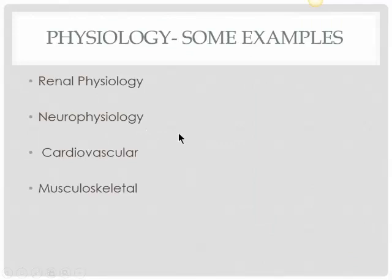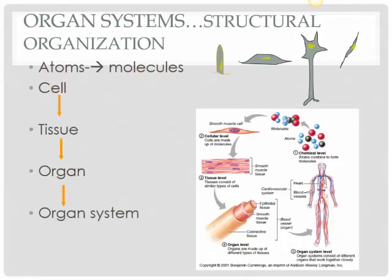So we covered anatomy. Physiology is the function of the structures of the body. There are many types of physiology: renal physiology is the function of the urinary system and especially the kidneys; neurophysiology is the function of the brain and nerves; cardiovascular physiology covers the heart and blood vessels; musculoskeletal covers muscles and the skeletal system; and gastrointestinal physiology covers the digestive system. If you know the structure of an organ, it's always easy to correlate the function, because they go hand in hand.